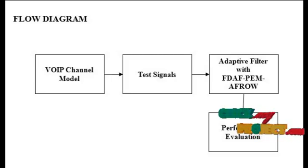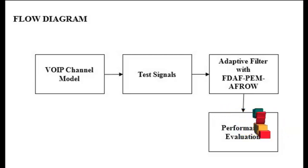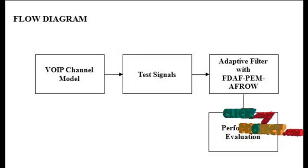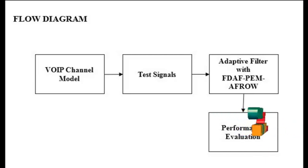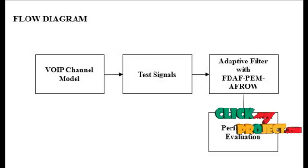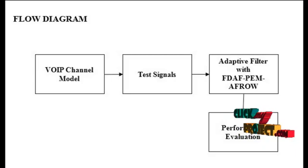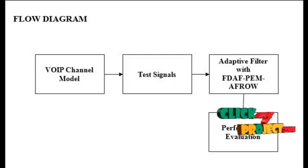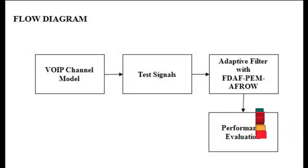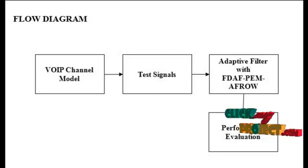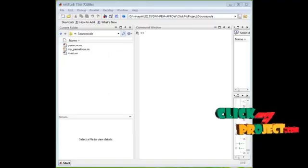The FDAF PEM-AF-ROW optimization algorithm uses the Levinson-Durbin algorithm to estimate the correlated samples with the true samples using initialization parameters. For performance evaluation, we evaluate the true value of samples and correlated samples, and the error between the room impulse response and acoustic echo cancellation output is displayed.